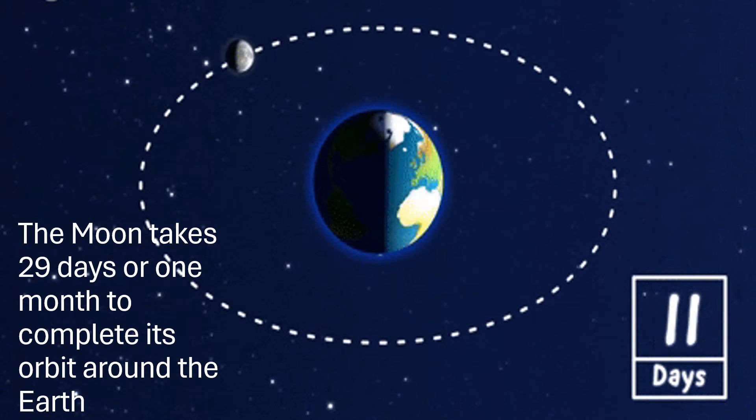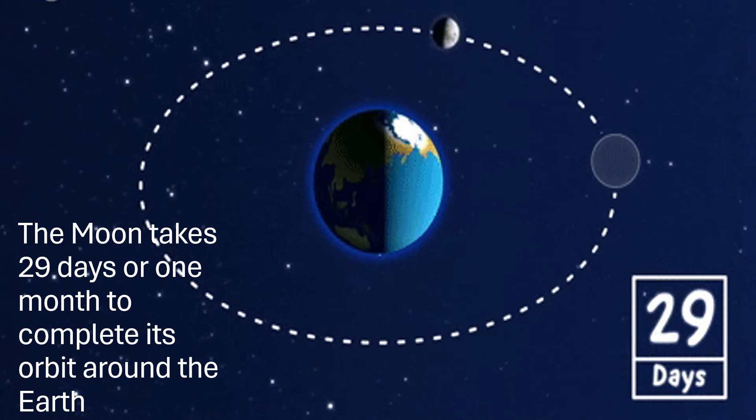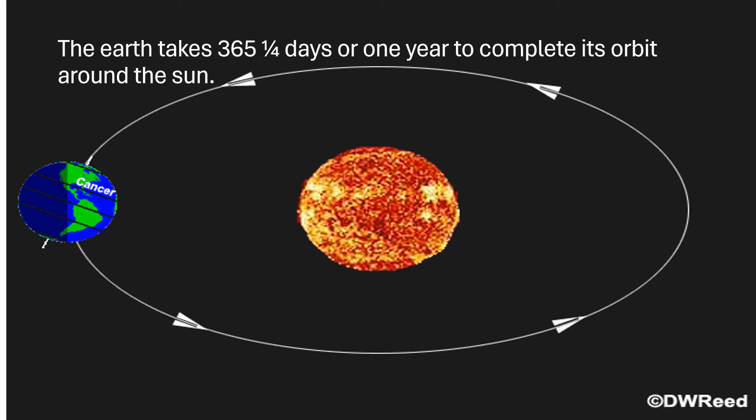The moon takes 29 days or one month to complete its orbit around the earth. The earth takes 365 and a quarter days or one year to complete its orbit around the sun.